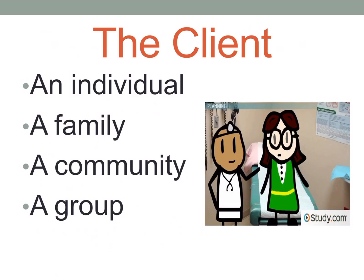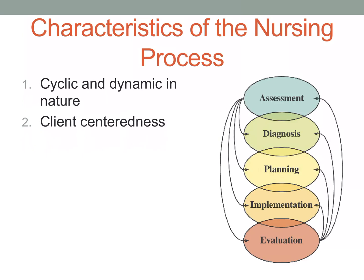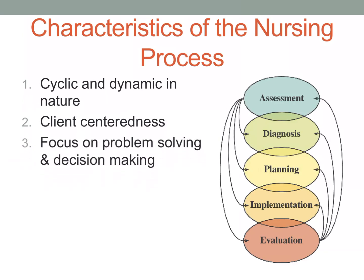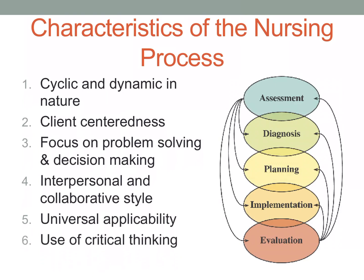We also have characteristics of the nursing process. First, it is cyclic and dynamic in nature. Second, it is client-centered. Third, it focuses on problem-solving and decision-making. Fourth, interpersonal and collaborative style. Fifth, we have universal applicability. Sixth, use of critical thinking. And lastly, there is clinical reasoning. So these are the seven characteristics of the nursing process.